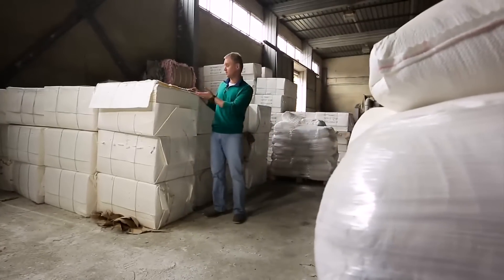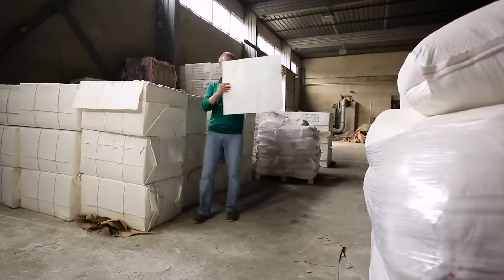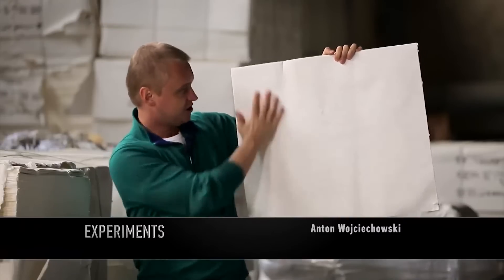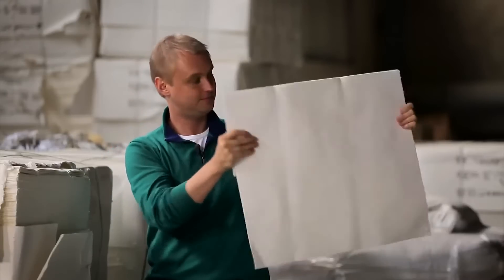Cellulose comes to the factory in these batches, or to call them more correctly, piles. It's already quite similar to paper in appearance and even to the touch, but no, this is just raw material.